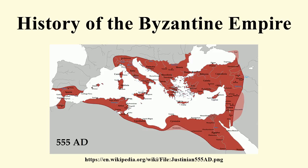Theodosius II further fortified the walls of Constantinople, leaving the city impervious to most attacks. The walls were not breached until 1204. To fend off the Huns of Attila, Theodosius gave them subsidies of gold. Moreover, he favoured merchants living in Constantinople who traded with the Huns and other foreign groups.